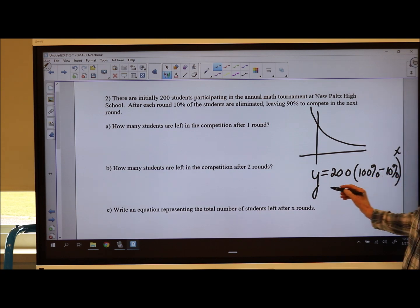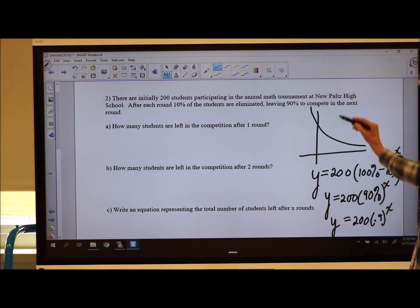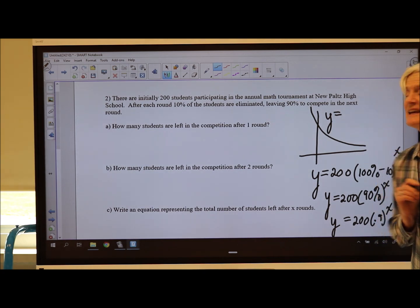Well, 100% minus 10% is 90%, and 90% in decimal land is 0.9 to the x. Or you can do the little trick that we talked about for percent decay, or percent decrease I should say.